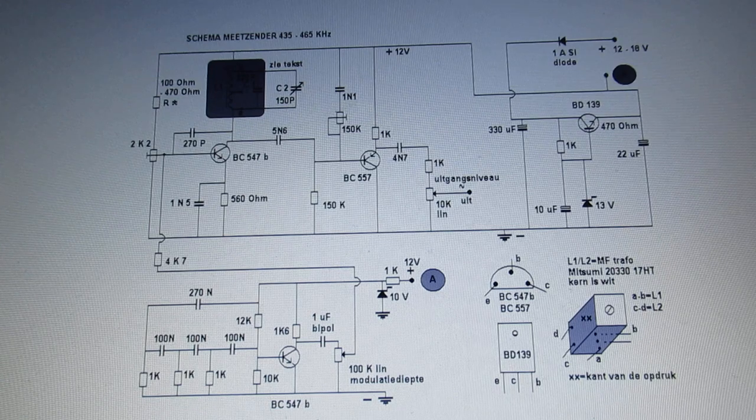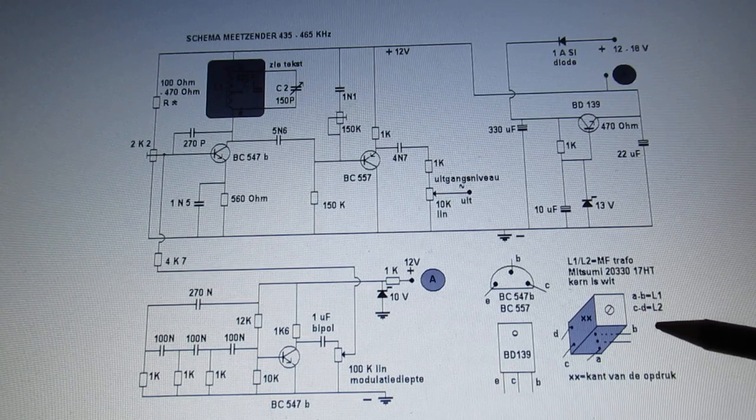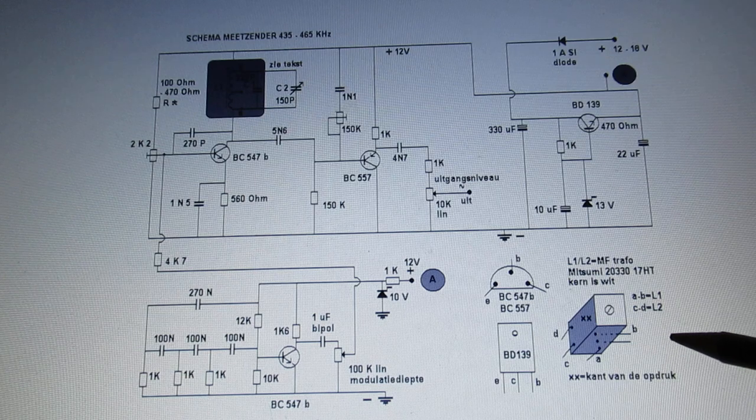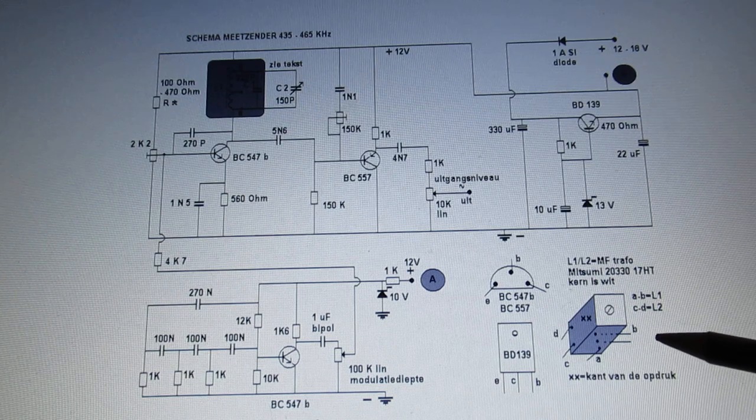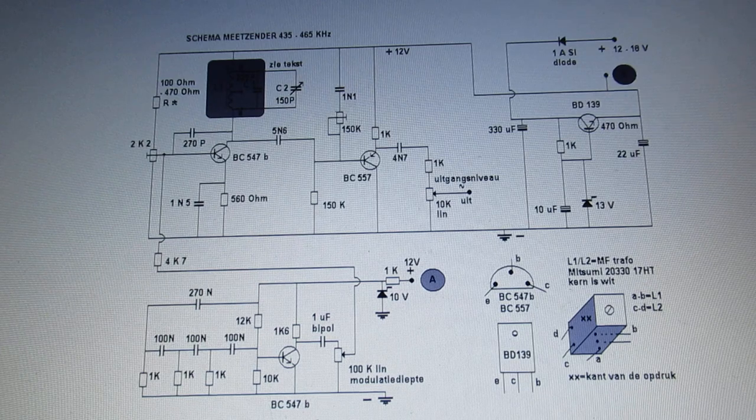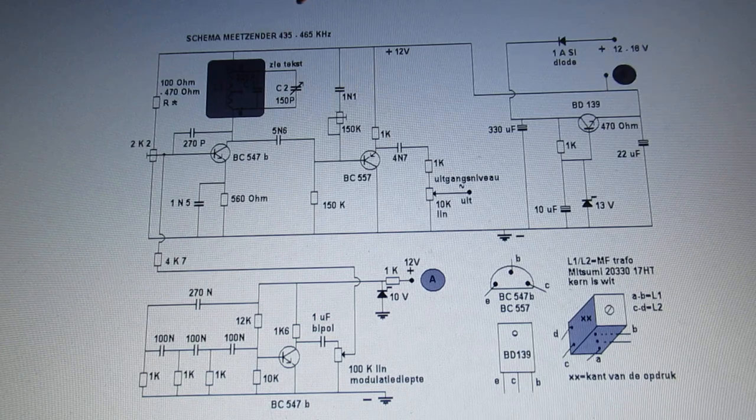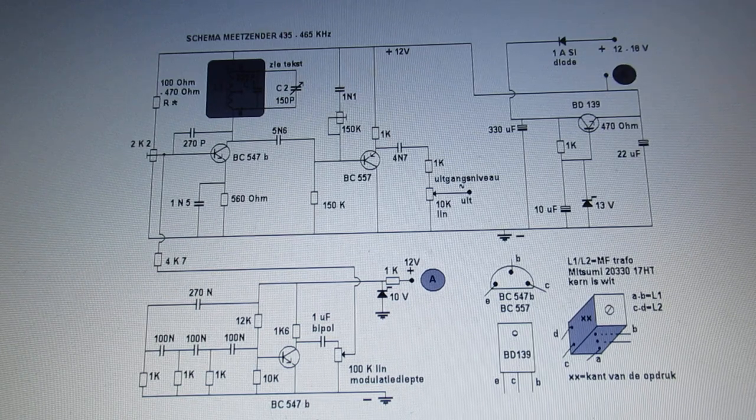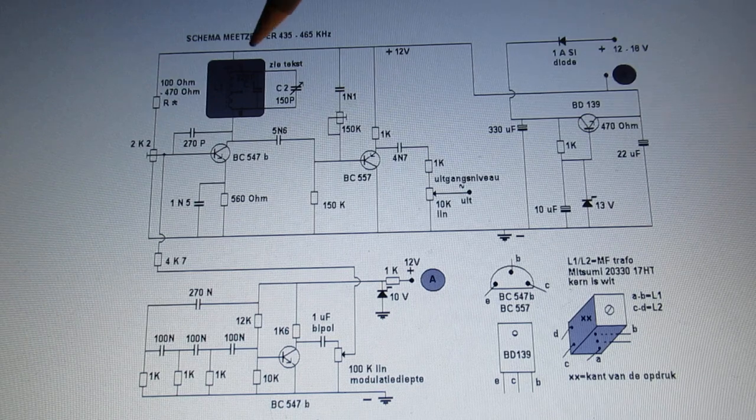I've used a normal IF can with this type number and got it to work successfully in this frequency band. That can mean you have to open that IF can and solder a variable capacitor parallel to it.